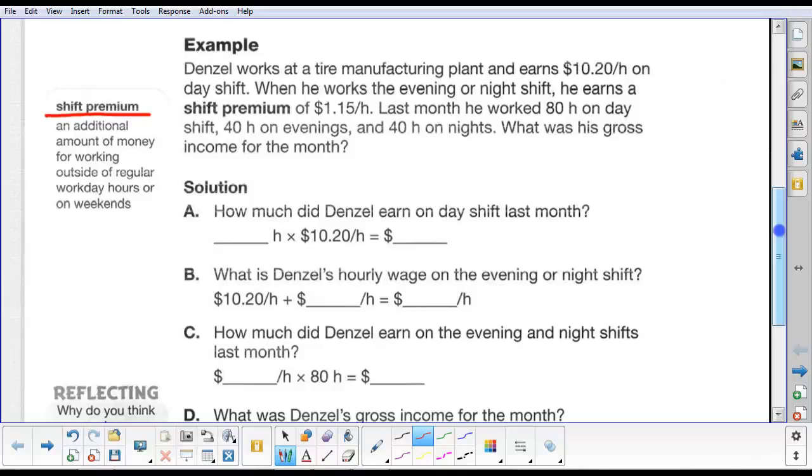Okay, so let's do the example. Denzel works at a tire manufacturing plant and earns $10.20 per hour on day shift. Usually, that could be 7 o'clock in the morning until 3, 8 o'clock until 4, 9 o'clock in the morning until 5, whatever. When he works the evening or night shift, he earns a shift premium of $1.15 per hour. Last month, he worked 80 hours on day shift, 40 hours on evenings, and 40 hours on nights. What was his gross income for the month?